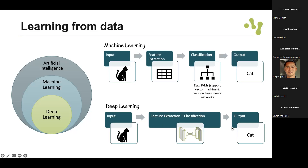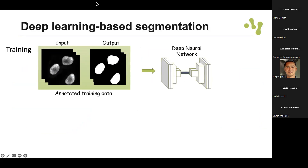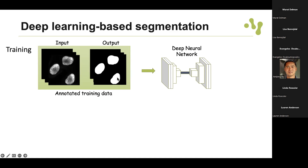Deep learning can be used for classification or other image analysis tasks, including segmentation. For a deep learning-based segmentation, you provide the network with pairs of annotated training data - the input and labeled data - and you expect to obtain a segmented mask. You train on a large number of samples in the training phase, then in the test phase you present a new image and obtain instance-based segmentation. Training is usually done on a GPU - depending on your data size it may be impossible to run locally - but once the model is trained you can use it locally on your computer.